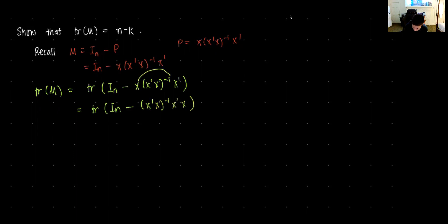So that means I rearrange these two at the end. And I know that this thing collapses down to an identity matrix of order K, as in what I know from my projection matrix. So this means that the trace of M is equal to IN minus IK.